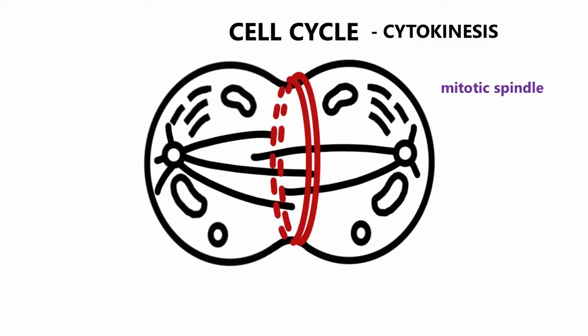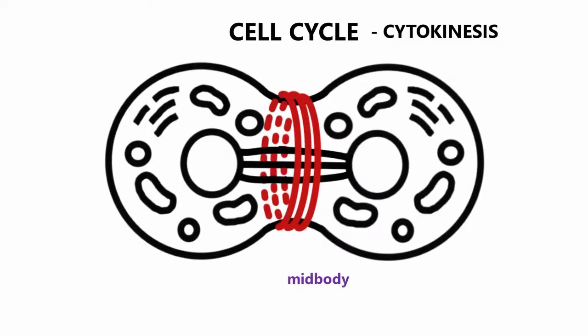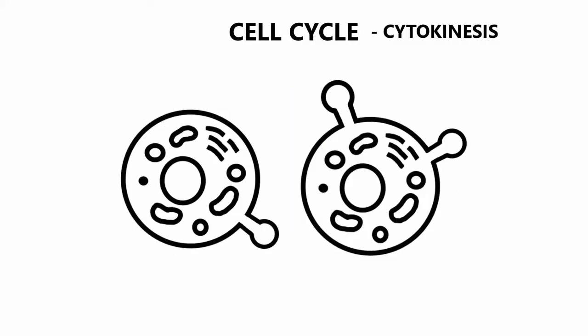By the end of contraction process, two cells are held together via a structure called midbody, which represents the remainings of the central spindle. When contraction is completed, membrane insertion and fusion seal the gap between the daughter cells.